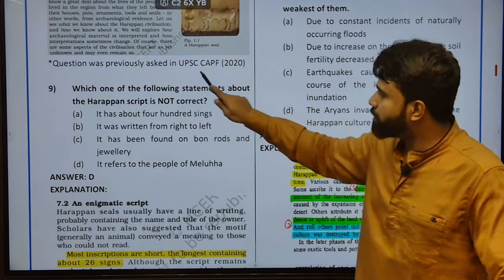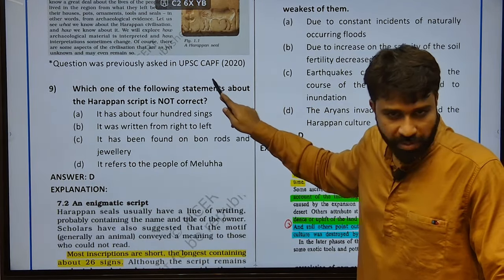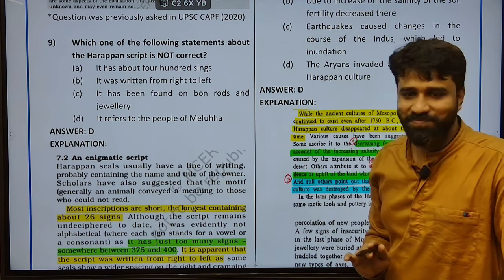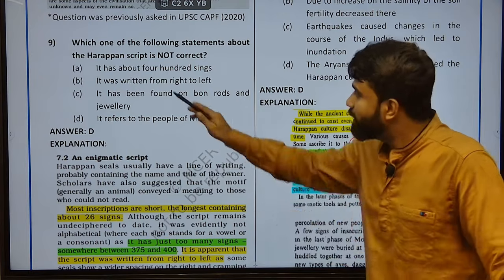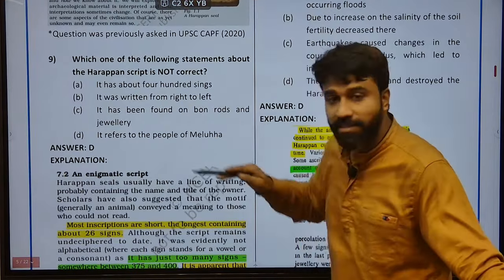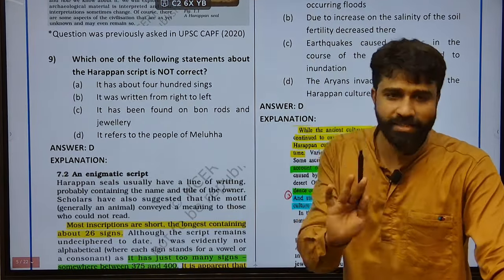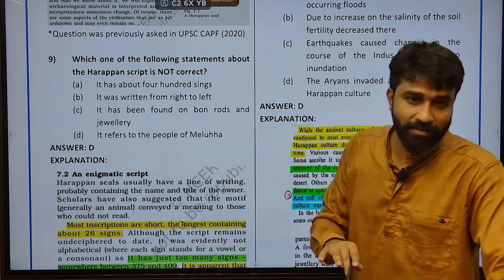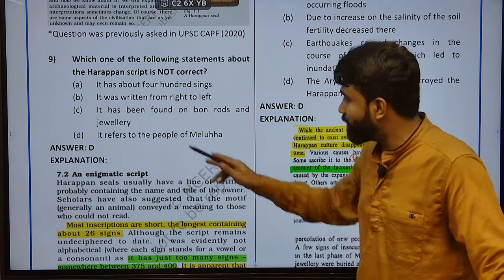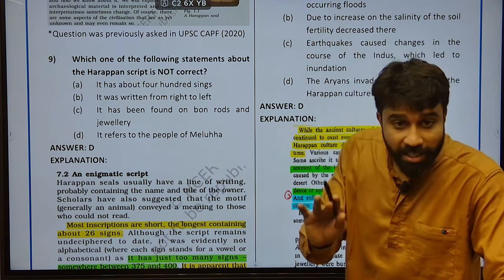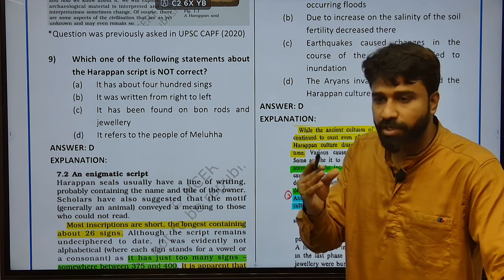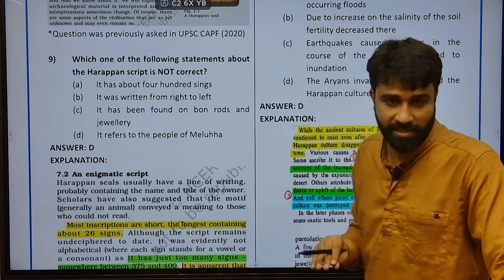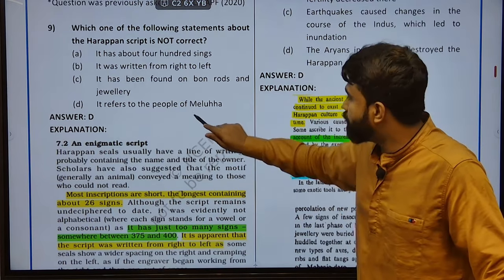This is a CAPF question asked in 2020 UPSC. Which one of the following statements about the Harappan script is not correct? It has about 400 signs — yes, around 375 to 400 signs. Next, it was written from right to left — yes, mostly from right to left. Next, it has been found on bone rods and jewelry — also true. Next, it refers to the people of Meluha.